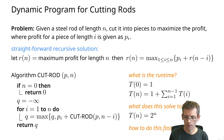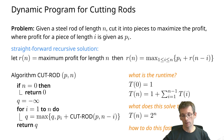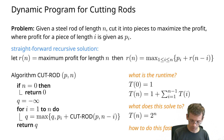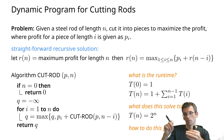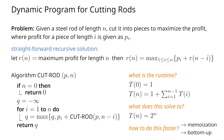What we should do instead is either compute bottom-up — first solve the small problems, keep those solutions, and then solve the larger problems by looking up what we already solved — or use so-called memoization, meaning we do recursive calls but as soon as we solve something once we store the solution. If we need to call it again, we do not recalculate but look up the solution that's already there.